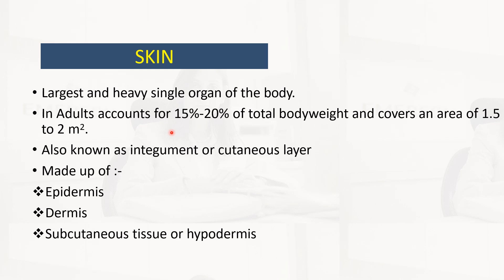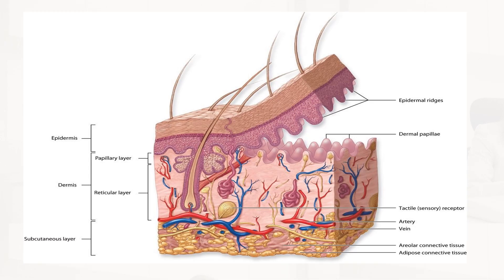The skin is actually the largest and heaviest single organ of the body. In adults it accounts for 15 to 20 percent of total body weight and covers an area of 1.5 to 2 square meters. Also known as the integument or cutaneous layer, it is made up of the epidermis, the dermis, and the hypodermis. The dermis is made up of two layers: the papillary layer and the reticular layer.